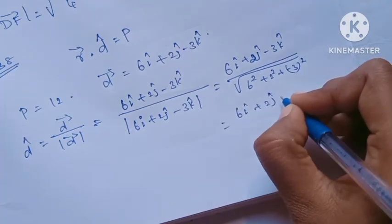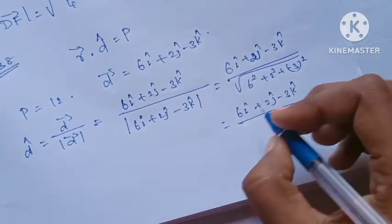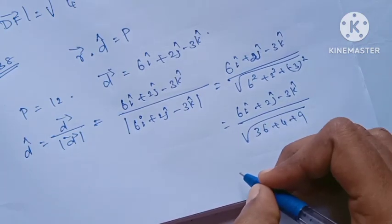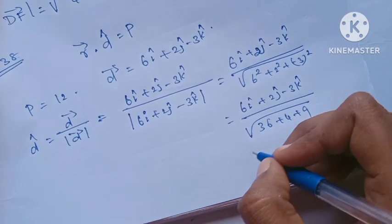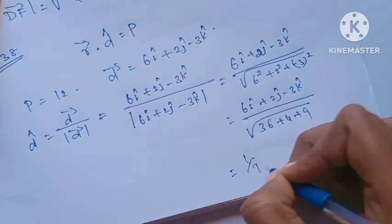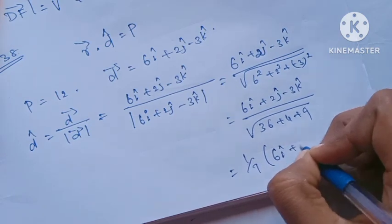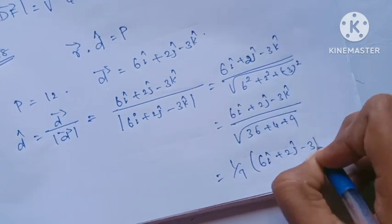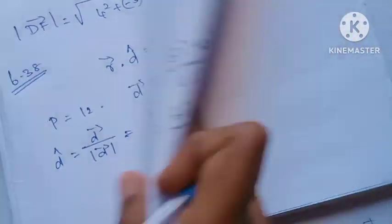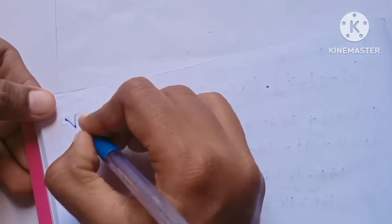6 squared is 36, plus 4, plus 9 equals 49. Root of 49 is 7. So n-cap equals 1 by 7 into (6i+2j-3k).